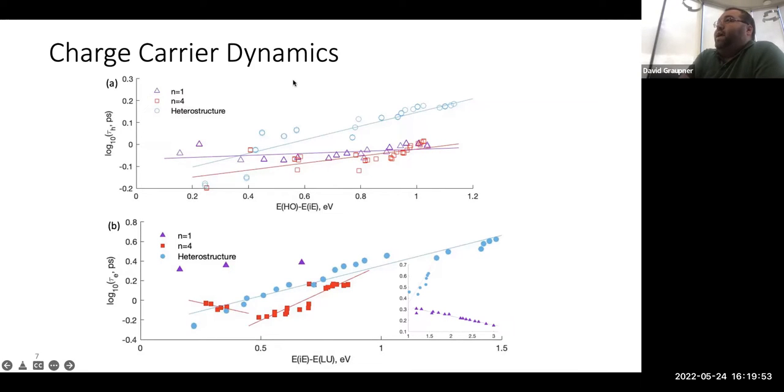This is the charge carrier dynamics, so we're looking at the log of the lifetime of the excitation versus the excitation energy. The thing to note from these graphs is that we see linear features for the heterostructure for both the hole, which is the top, and the electron, which is the bottom. This corresponds well with the band gap law.